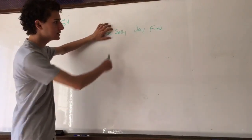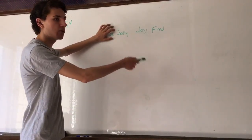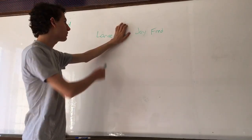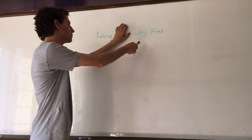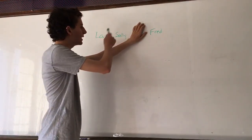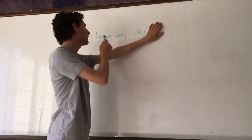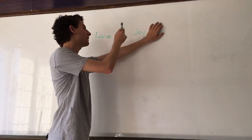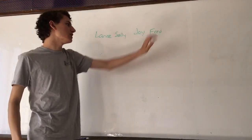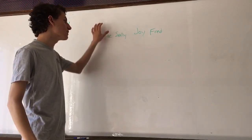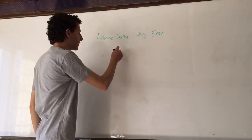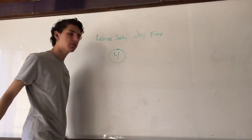If you leave Lance out, you get Sally, Joey, and Fred — that's one choice. If you leave Sally out, you get Lance, Joey, and Fred. If you leave Joey out, you get Lance, Sally, and Fred. If you leave Fred out, you get Lance, Sally, and Joey. Those are the only four ways you can arrange the teams, because those are the only four ways you can exclude one person. So the answer is four.